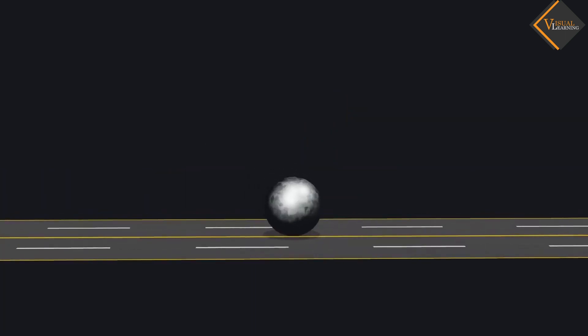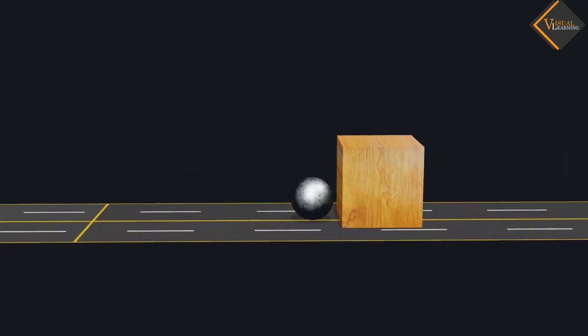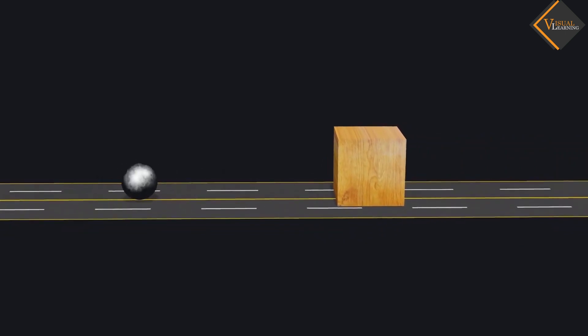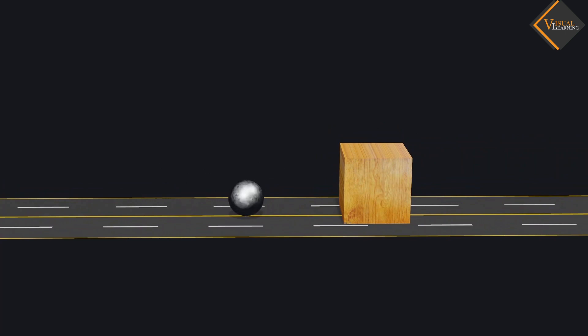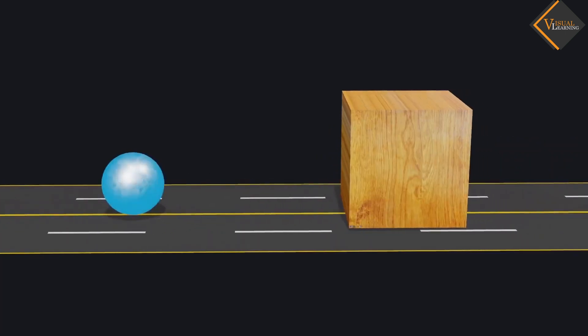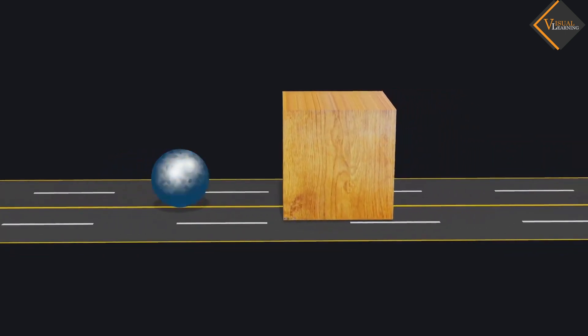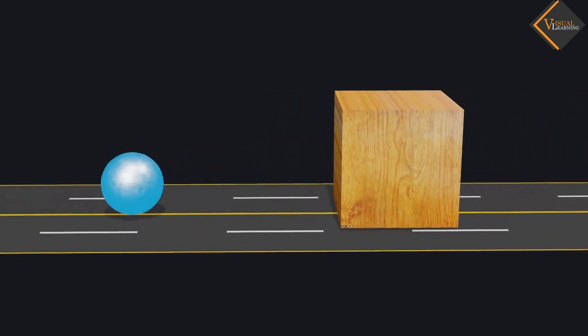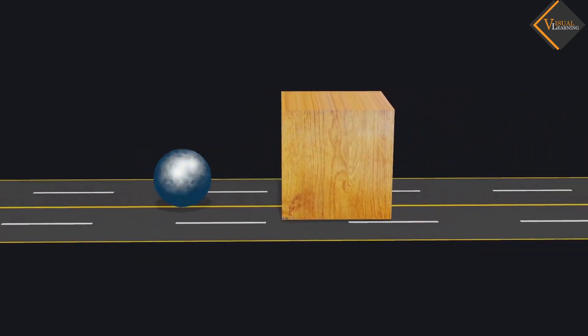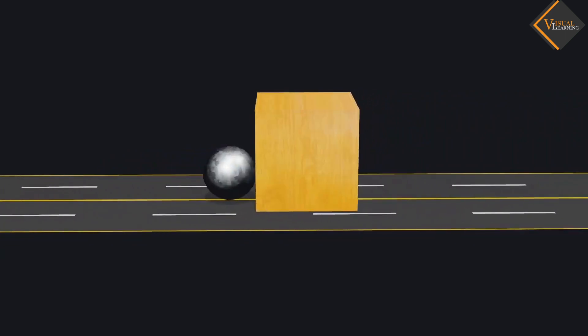If the ball moves faster, it will hit the wooden block with more impact, and the wooden block will be displaced more than the last one. This happens because energy is transferred from the ball to the wooden block, and this transferred energy is known as kinetic energy.